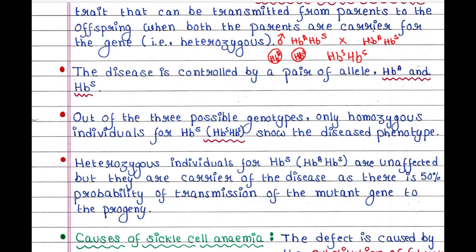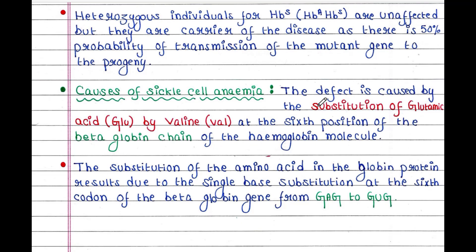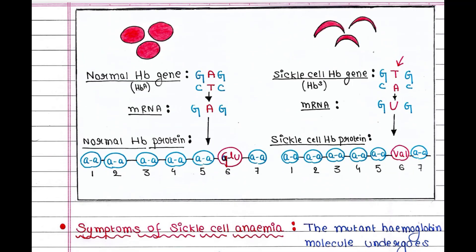Now let's see the causes of sickle cell anemia, which we will understand from a figure. This is the normal Hb gene, HbA. A gene contains a series of codons — here one of the codons is CTC, and the mRNA gets generated accordingly via transcription, which has the codon GAG. The protein formed is called beta globin protein, which is the building block of hemoglobin. One of its amino acids is glutamic acid, present at the sixth position of the protein.